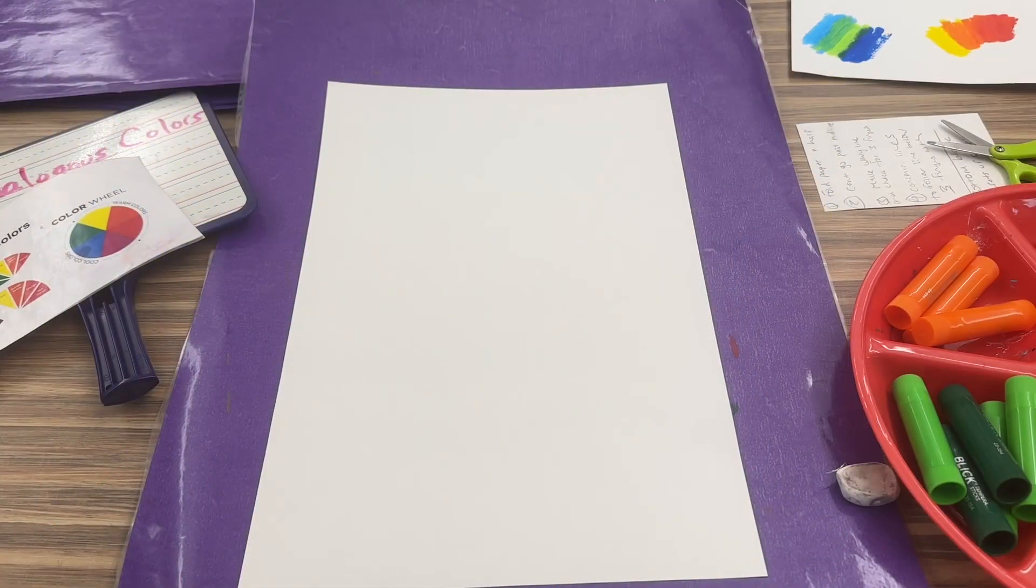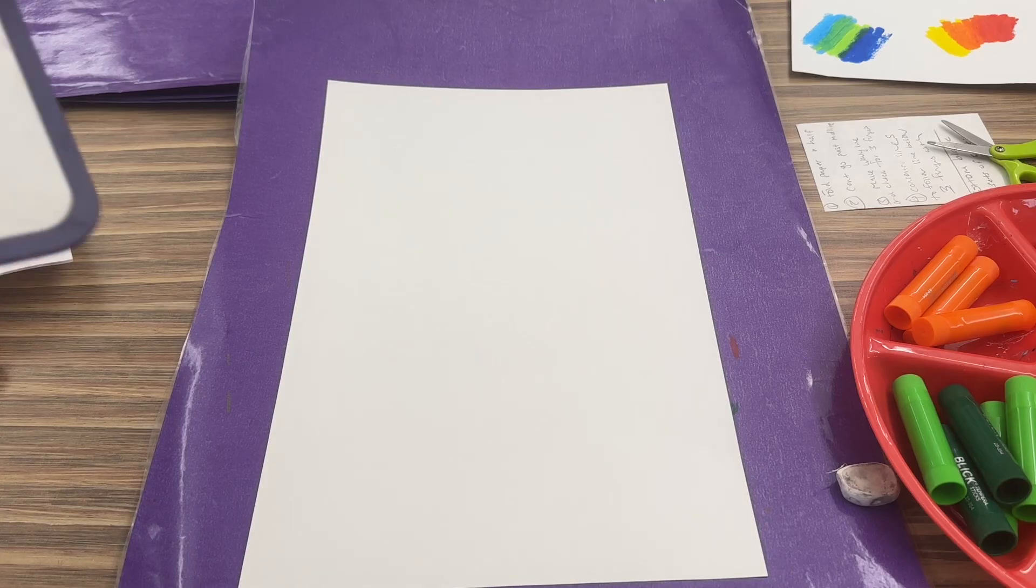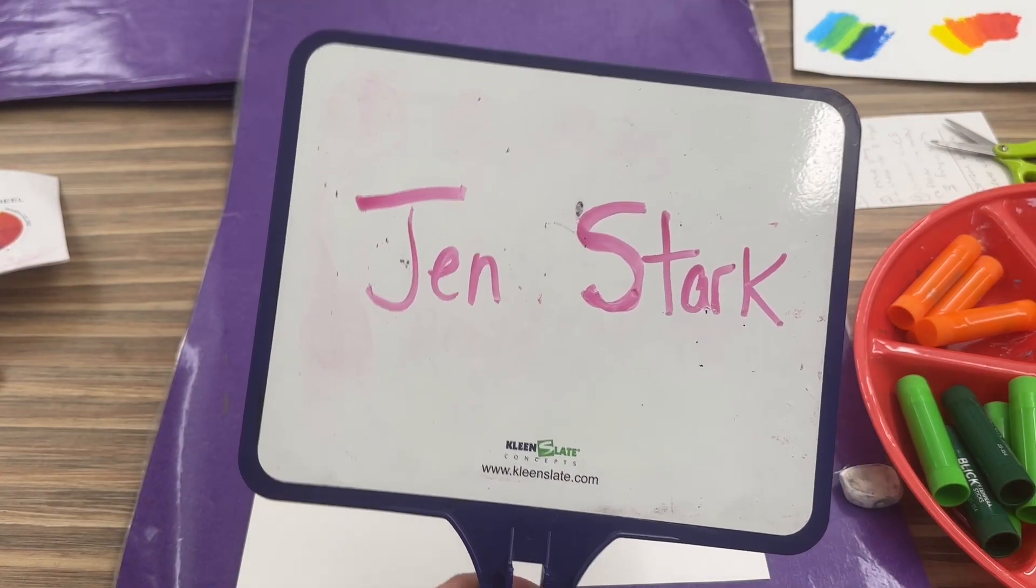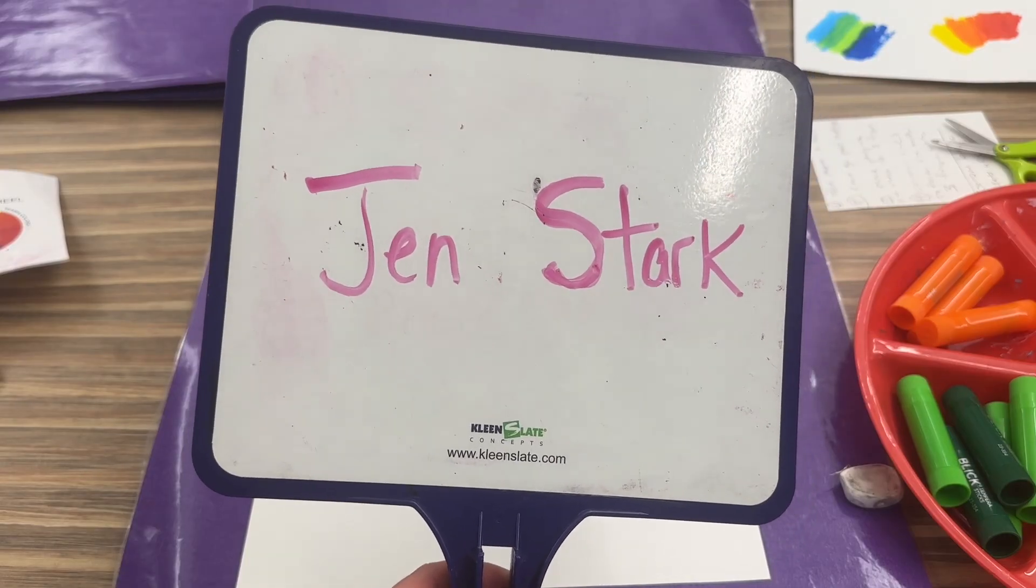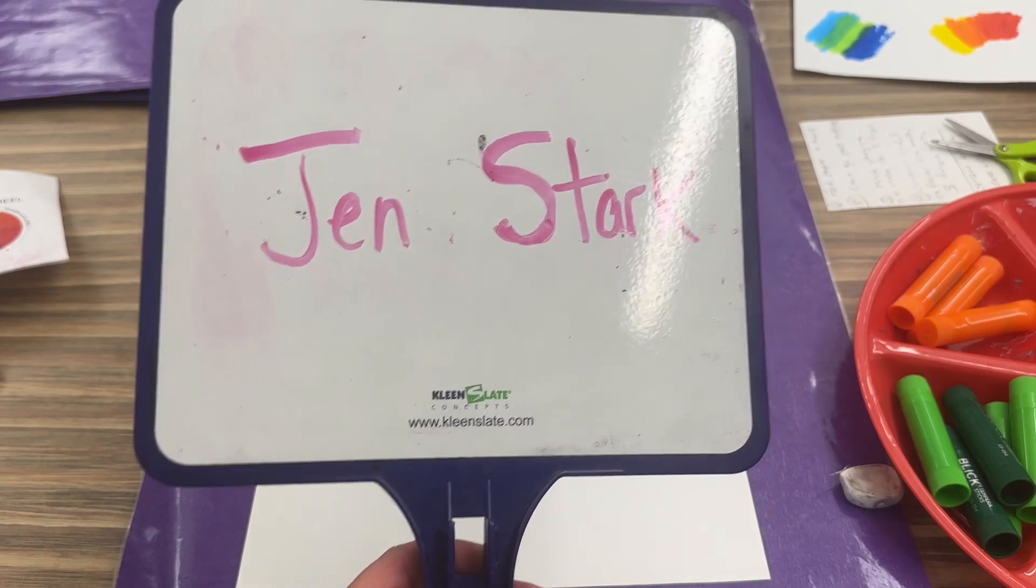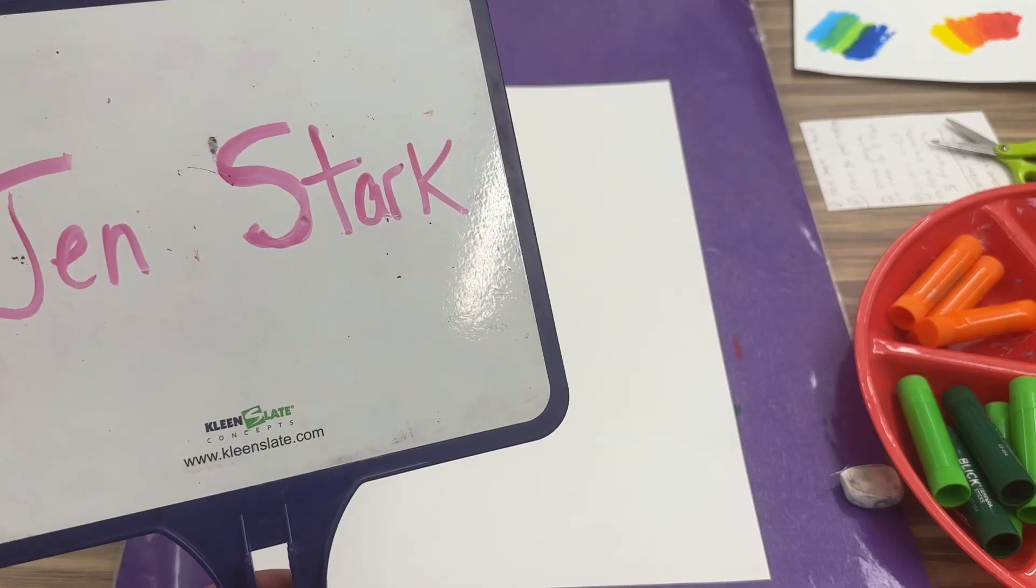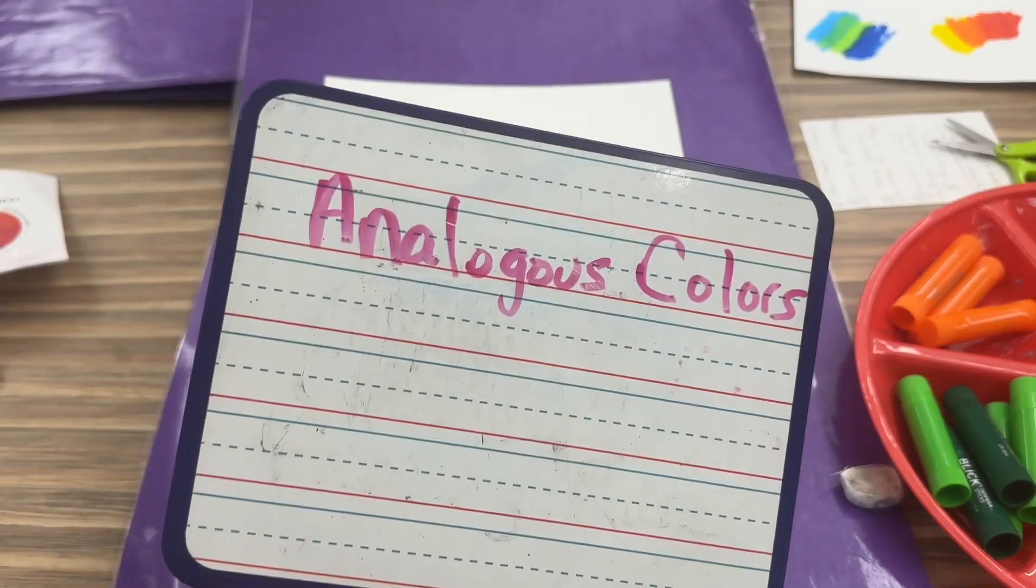Hi fourth graders, we are gonna be starting our first project of the school year. We already looked at some artwork by the Miami-based artist Jen Stark. We are gonna be making a mural inspired by her by making our own drips. We are going to be working with analogous colors.